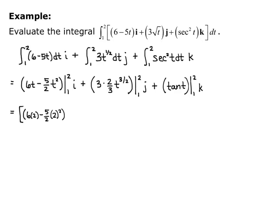Now I plug in my upper bound minus the antiderivative with my lower bound plugged in. So I have 6 times 2 minus 5/2 times 2 squared, minus, with the lower bound, 6 times 1 minus 5/2 times 1 squared — that gives my i component. My j component will be, first I'll simplify a little.